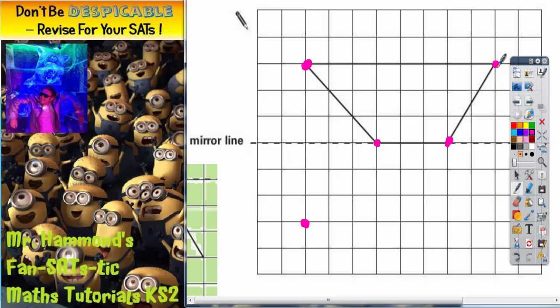This corner is one, two, three to the mirror line so we go the same again, one, two, three on the other side.